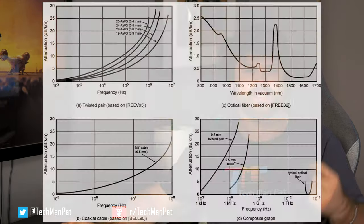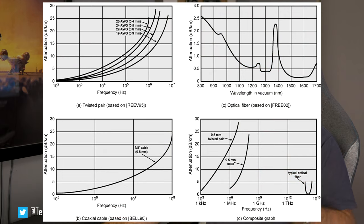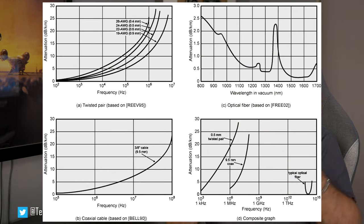Line attenuation — line attenuation, aka loss, is a measure of how much the signal has degraded between the DSLAM at the node down your street and the modem, and is largely a function of distance from the exchange and the node. The lower the dB, the better. Attenuation is logarithmic, and each 3 dB of attenuation halves the strength of the signal power received.